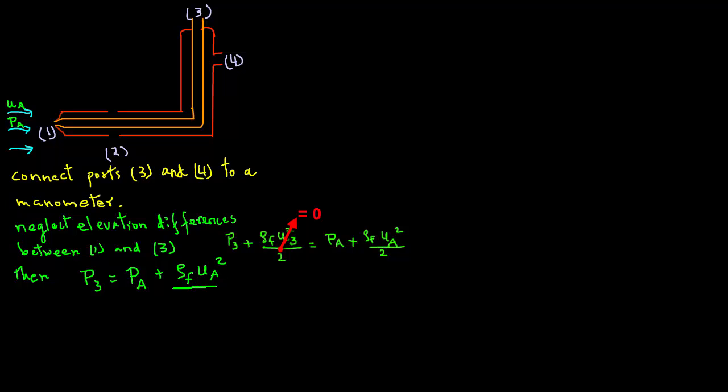We'll call it equation 1. Also, note that at location 4, the pressure will be the same as location 2, which is the side hole, and that pressure is the same as pressure PA at location A. So P4 equals PA, and we'll call that our second equation. If we subtract equation 2 from 1,